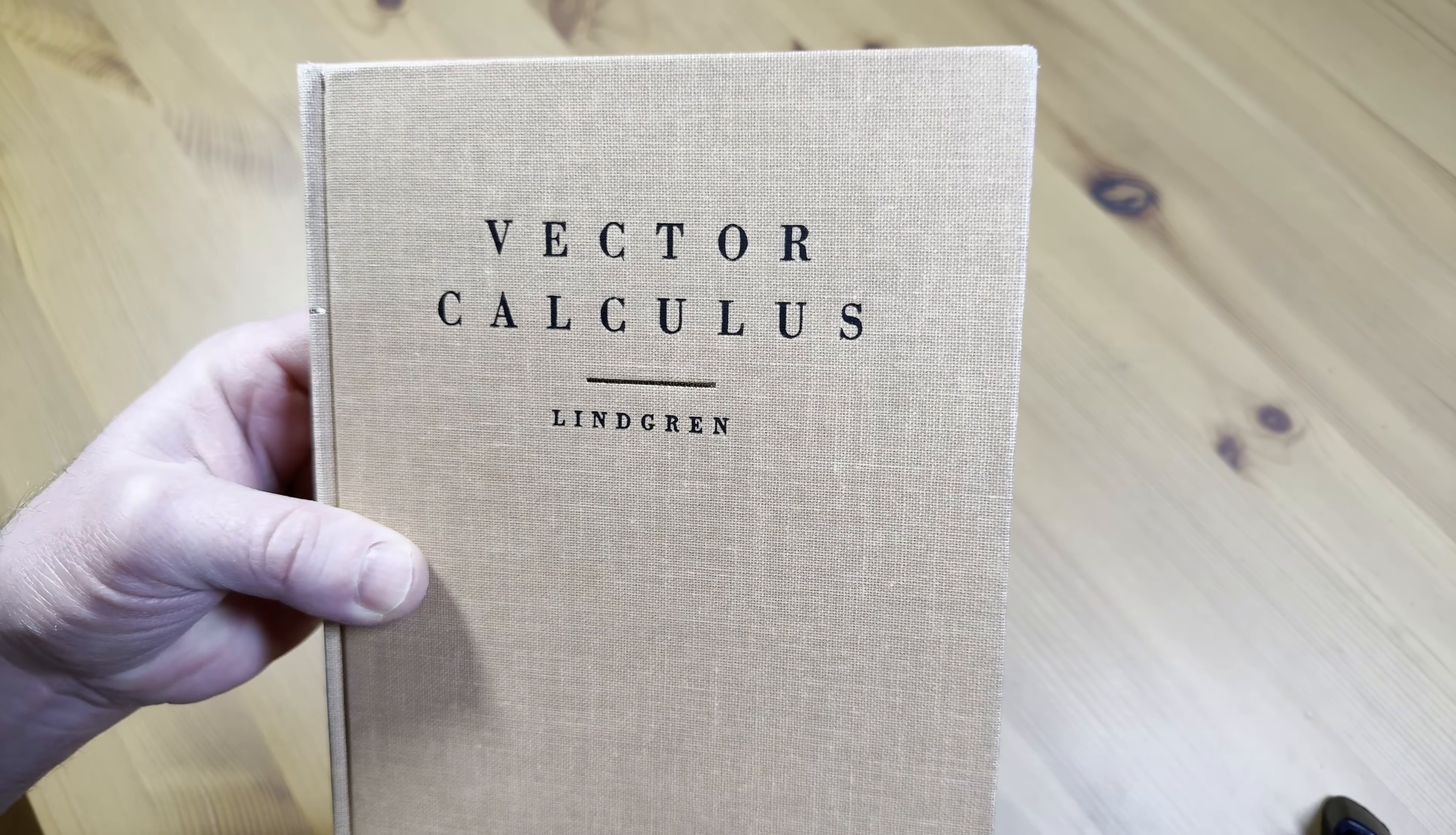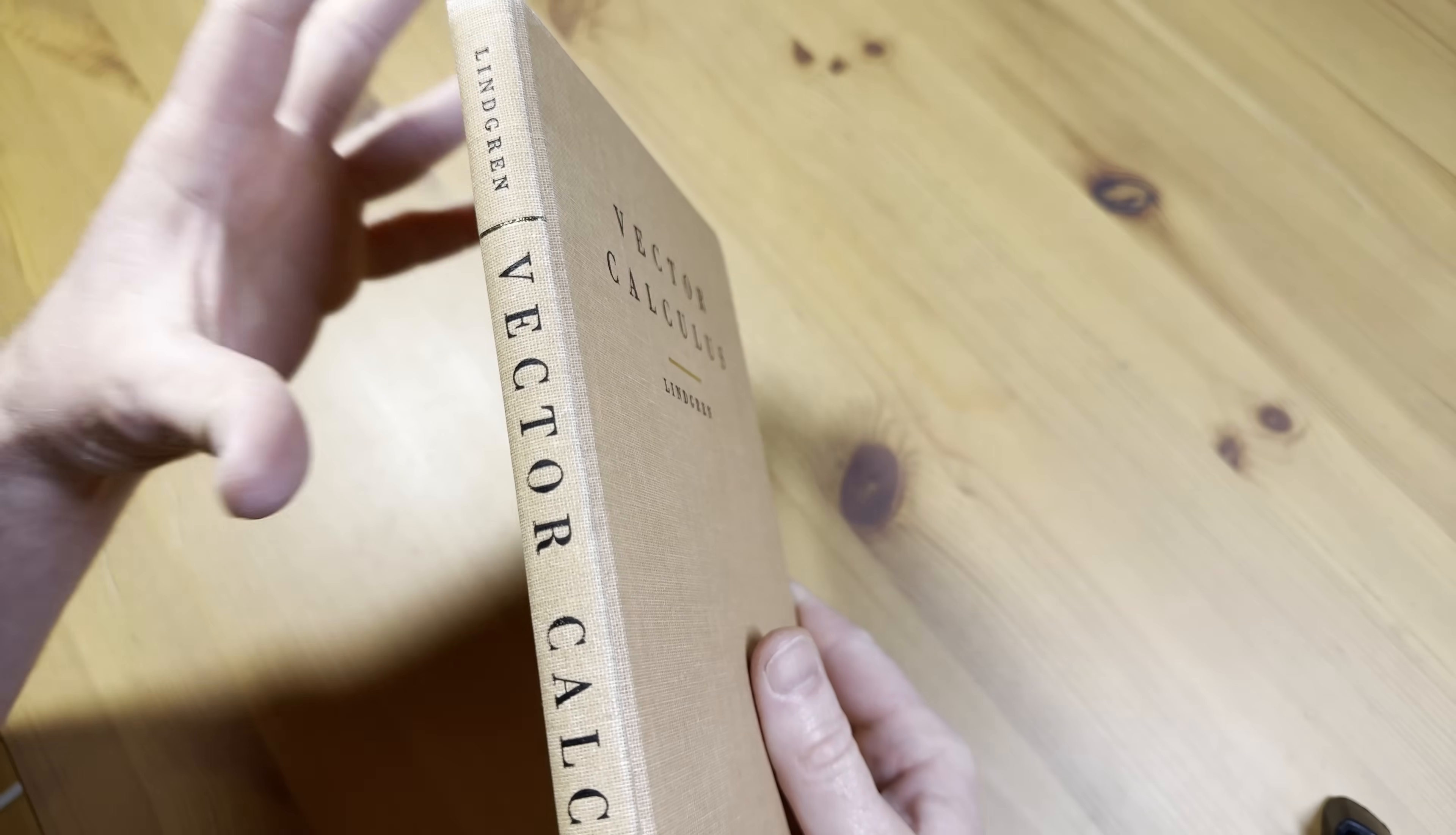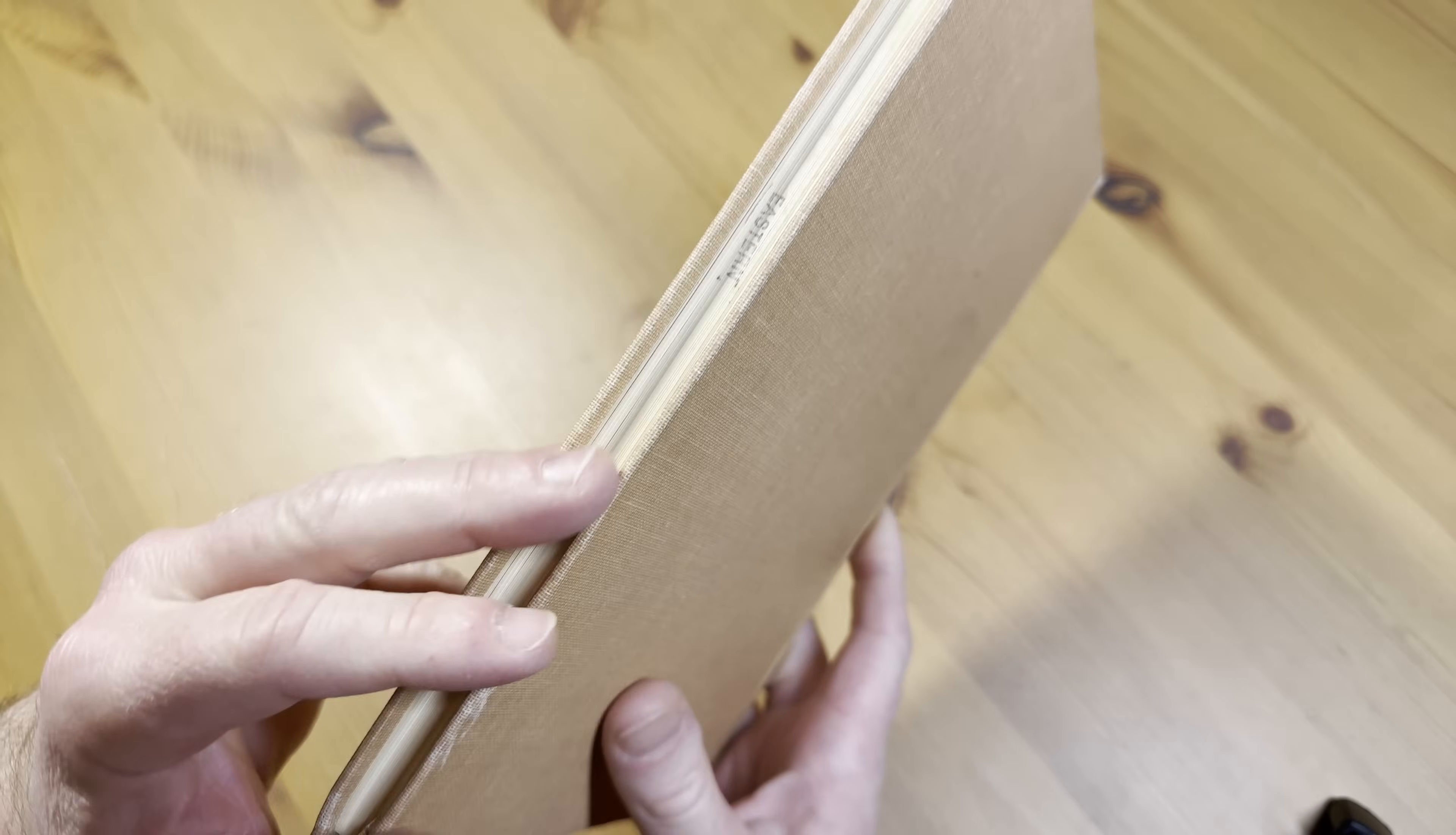This is Vector Calculus by Lindgren. This is a book that a person could use to learn vector calculus on their own. It's an old book, probably hard to find but worth it if you can get your hands on it.